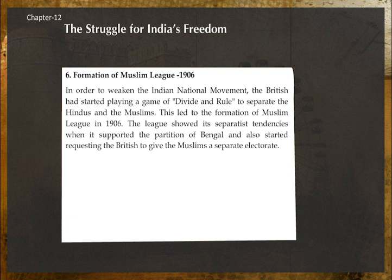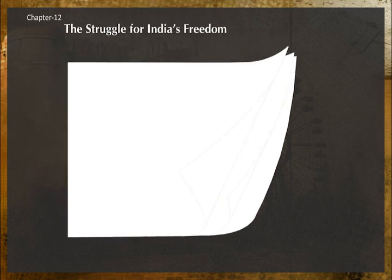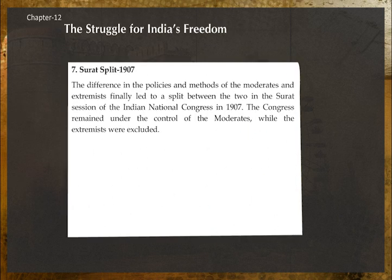Formation of Muslim League, 1906: To weaken the Indian national movement, the British pursued a policy of divide and rule to separate the Hindus and the Muslims. This led to the formation of the Muslim League in 1906. The League showed its separatist tendencies by supporting the partition of Bengal and requesting the British to give Muslims a separate electorate.